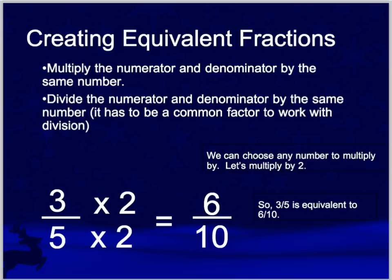In order to create equivalent fractions, read the bullet points with me. First: multiply the numerator and denominator by the same number — whatever we do in the numerator, we have to do in the denominator as well. Or, you can also divide the numerator and denominator by that same number. Note: it has to be a common factor to work with division.